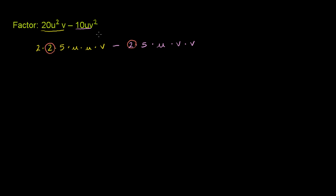Maybe I'll circle that one. I could have circled that one. They both have 1, 5. That's 1, 5, 1, 5. They both have 1u. 1u there. This one has 2u, but only this one has 1. And they both have at least 1v.